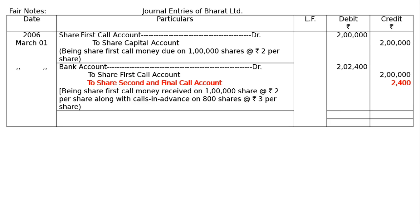Then the received entry: bank account debit. Rs. 2 lakh was received for share first call. Also, for share second and final call, Ashok, a shareholder holding 800 shares, paid the second and final call amount along with the first call money — to share second and final call account, 800 into 3, that is Rs. 2400. Being share first call money received on 1 lakh shares at Rs. 2 per share along with calls in advance on 800 shares at Rs. 3 per share.